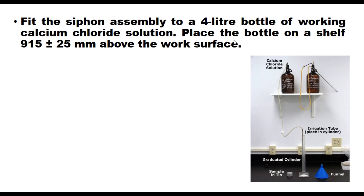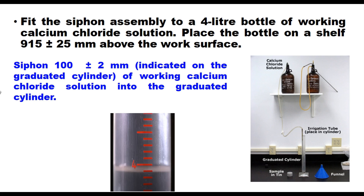Fit the siphon assembly to a 4-liter bottle of working calcium chloride solution and place the bottle on a shelf 915 ± 25 mm above the working surface. Siphon 100 ± 2 mm of working calcium chloride solution into the graduated cylinder through the irrigation tube placed in the cylinder.